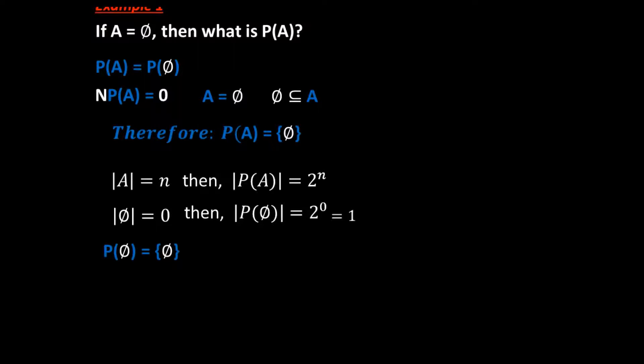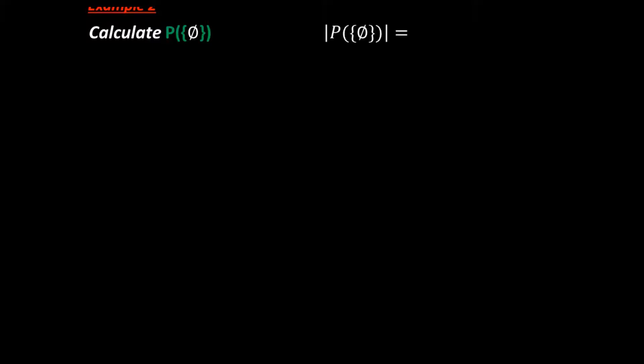For example, the power set of the empty set equals the subset of the empty set — it's only one subset. Now let's move to example two. We calculate the power set of the set containing the empty set. The first thing we do is calculate the cardinality of this power set. We only have one set, so it will be 2 to the power 1, and the answer is two — meaning our result should have two subsets.